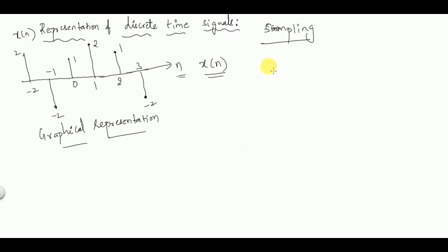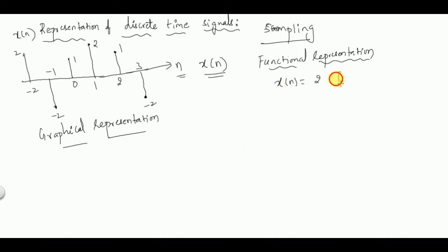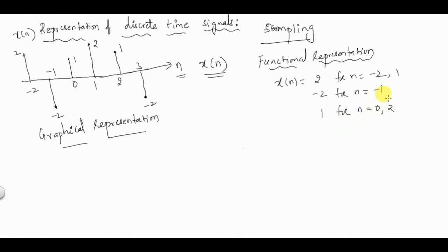We can also represent it with functional representation. In functional representation we represent the signal as a function: x of n equals 2 for n equal to minus 2, minus 2 for n equal to minus 1, 1 for n equal to 0, 2 for n equal to 1, 1 for n equal to 2, and minus 2 for n equal to 3. This kind of representation for different values of n is called functional representation of discrete time signals.